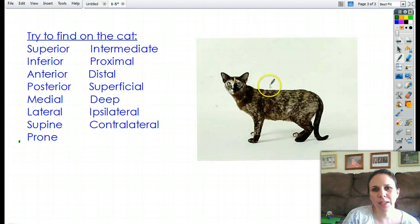Okay. Intermediate. His nose is intermediate to his eyes. His tongue is intermediate to his whiskers. His belly button is intermediate to his hips on either side. So just anything in between.